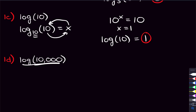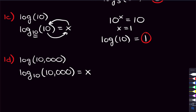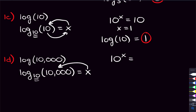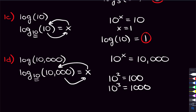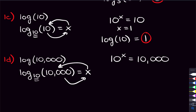We do the same thing with log of 10,000. Again, no base shown means the base is 10. Set it equal to x, make the 10 bigger, x becomes the power, and 10,000 goes to the other side. We're asking: 10 to what power equals 10,000? We know 10² is 100, 10³ is 1000, so 10⁴ is 10,000. So x is 4, and log of 10,000 equals 4.